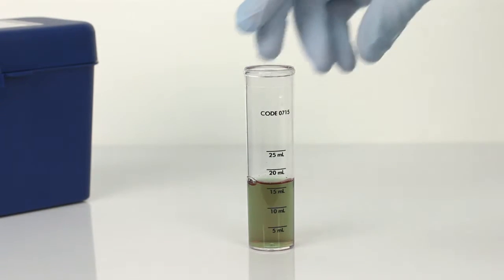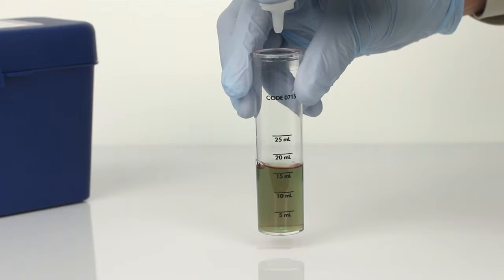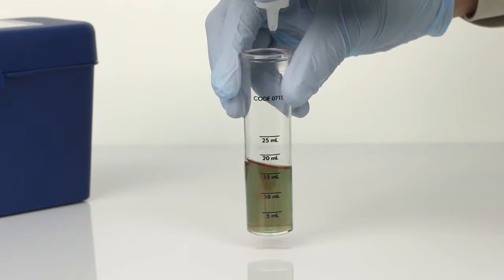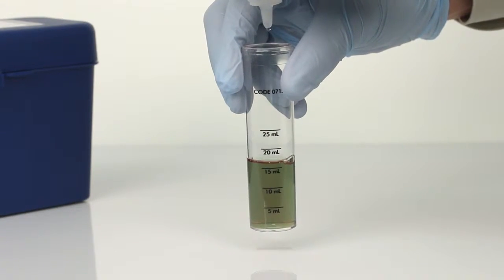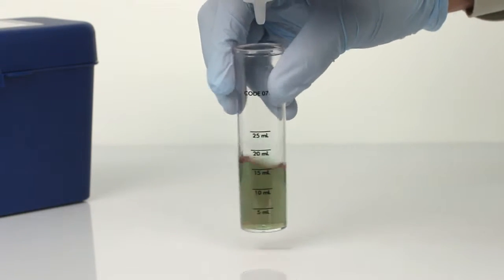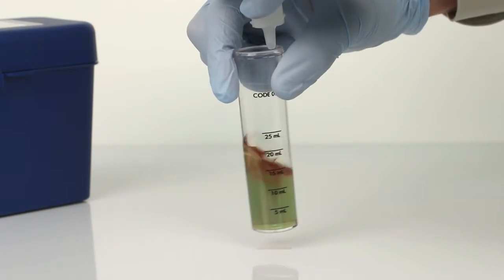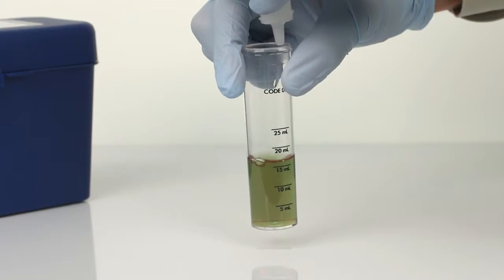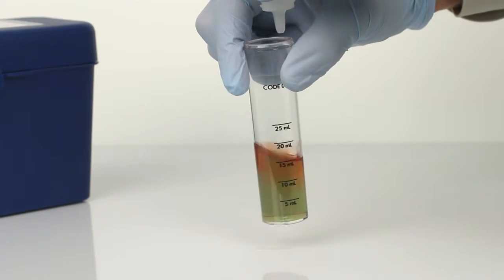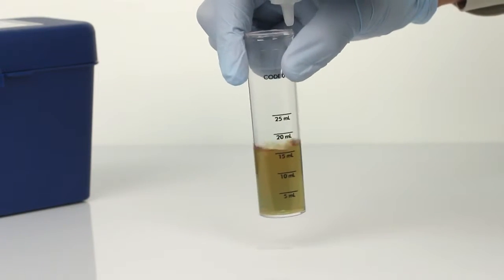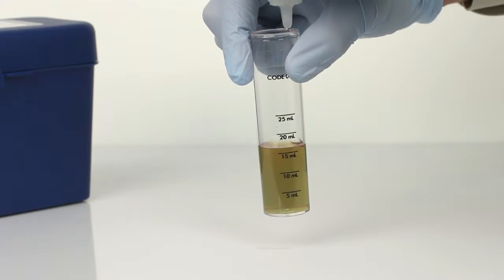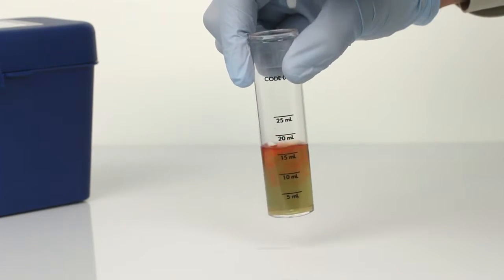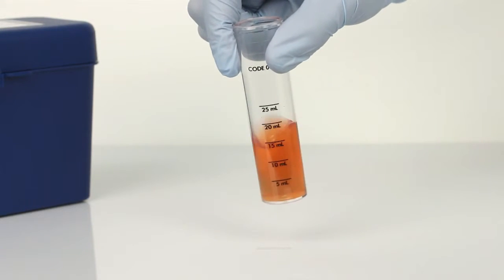The next step is to perform the titration using QAC titrating solution. It's important to make sure you have the proper titrant and sample size for your test. Hold the bottle vertically as you add the titrant one drop at a time, counting the number of drops. Swirl the vial after each drop to properly mix. The test is complete when the sample color has changed from green to brown.